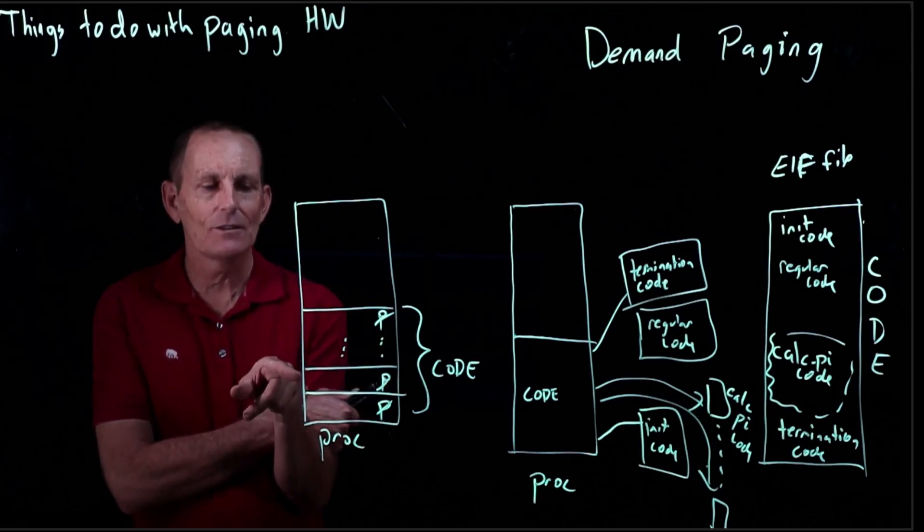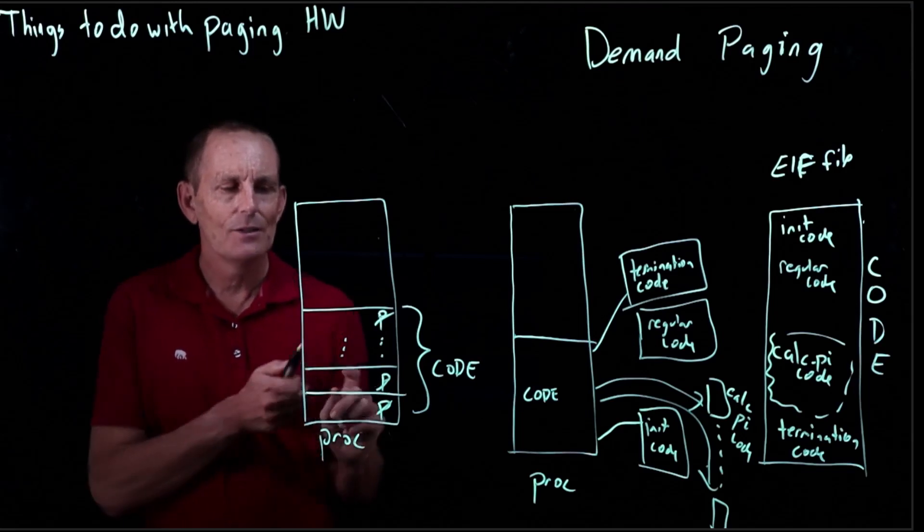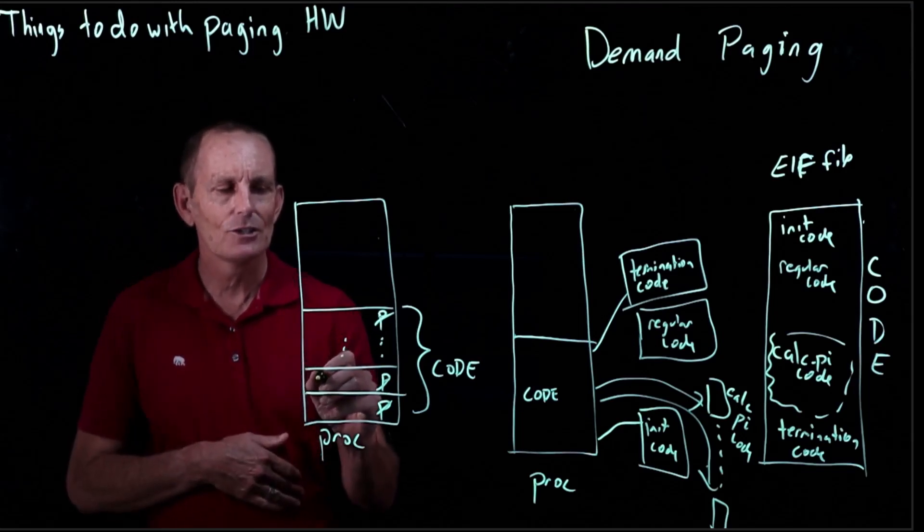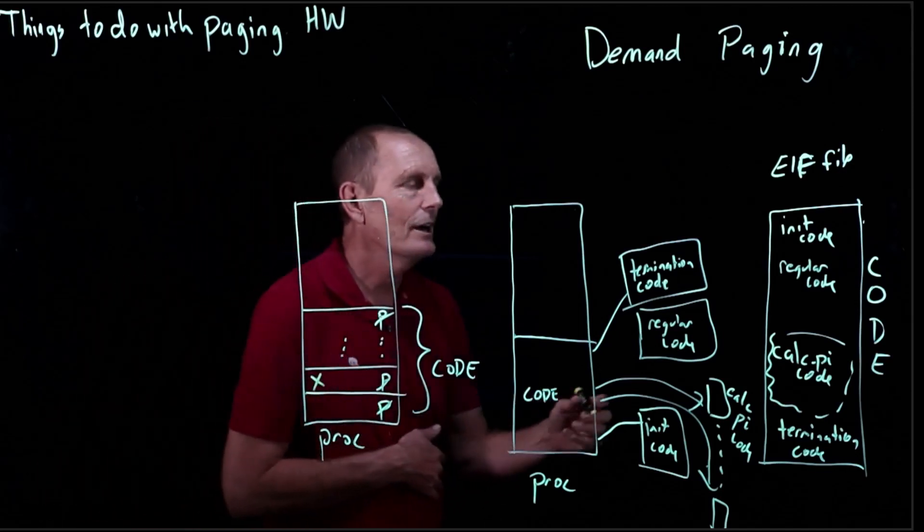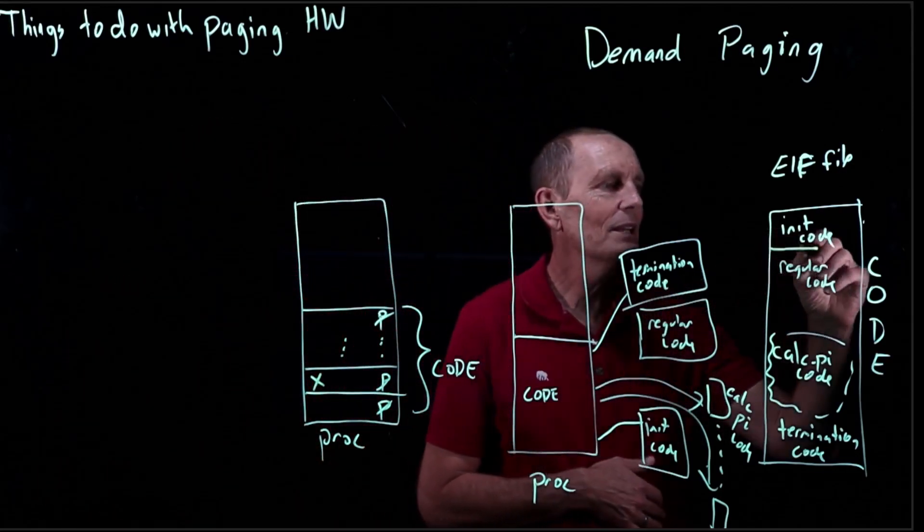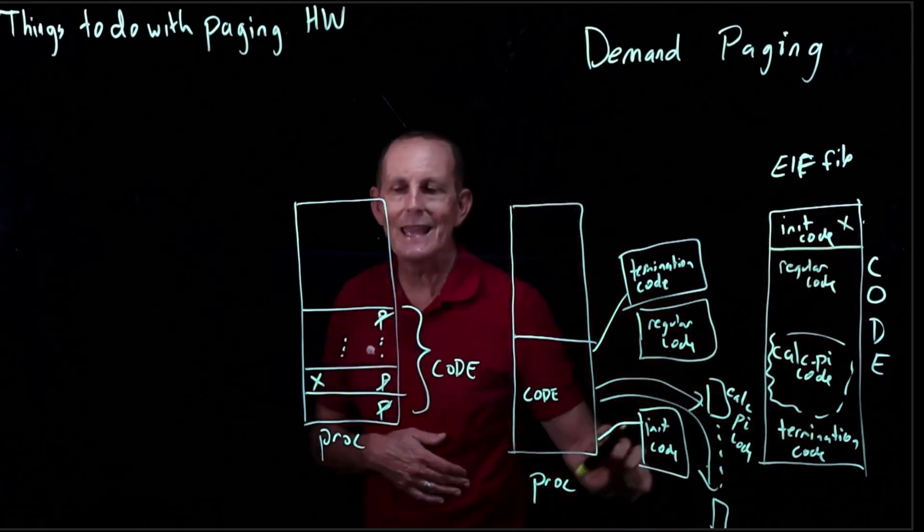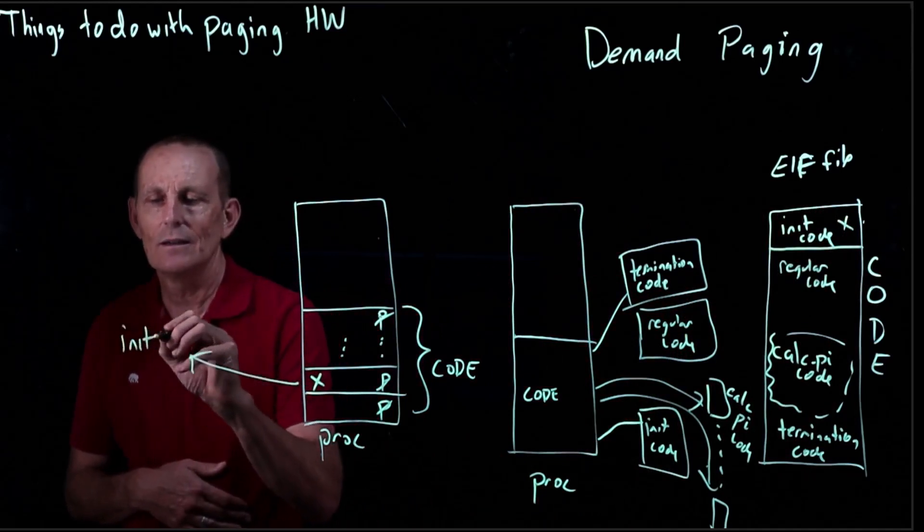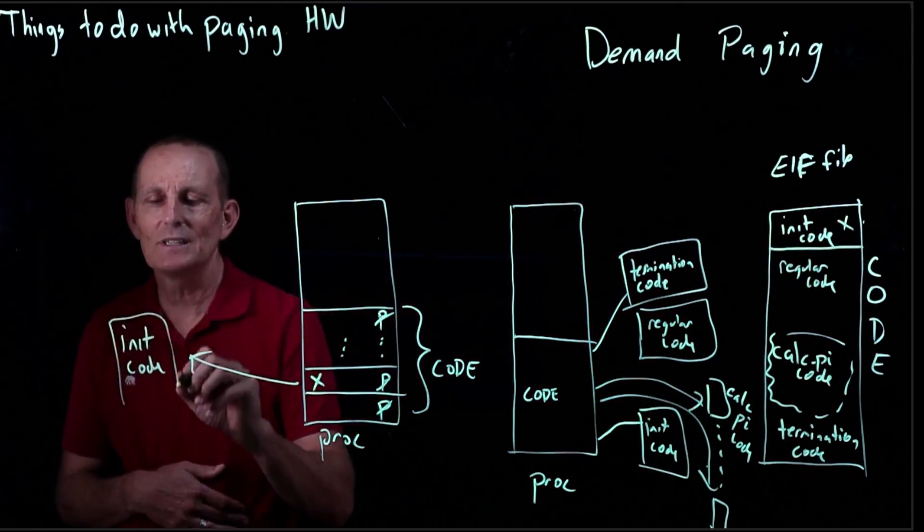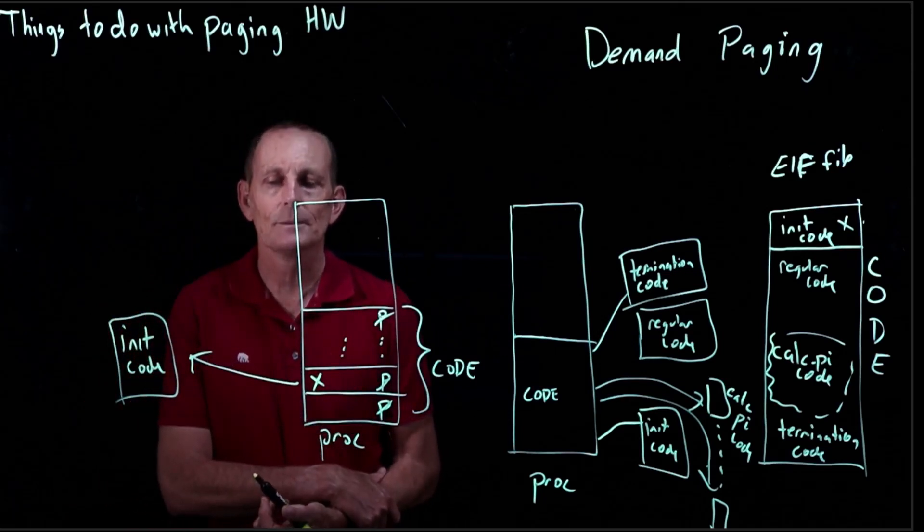And I know the offset within the code segment, and I know where that was in the ELF file. So if I need this particular page here, I can go ahead and go to the ELF file and read it. And it happens to be, let's say, here. And so I will read this page, demand paging it in. And so this will now point at a page that happens to consist of the initial code for the process.